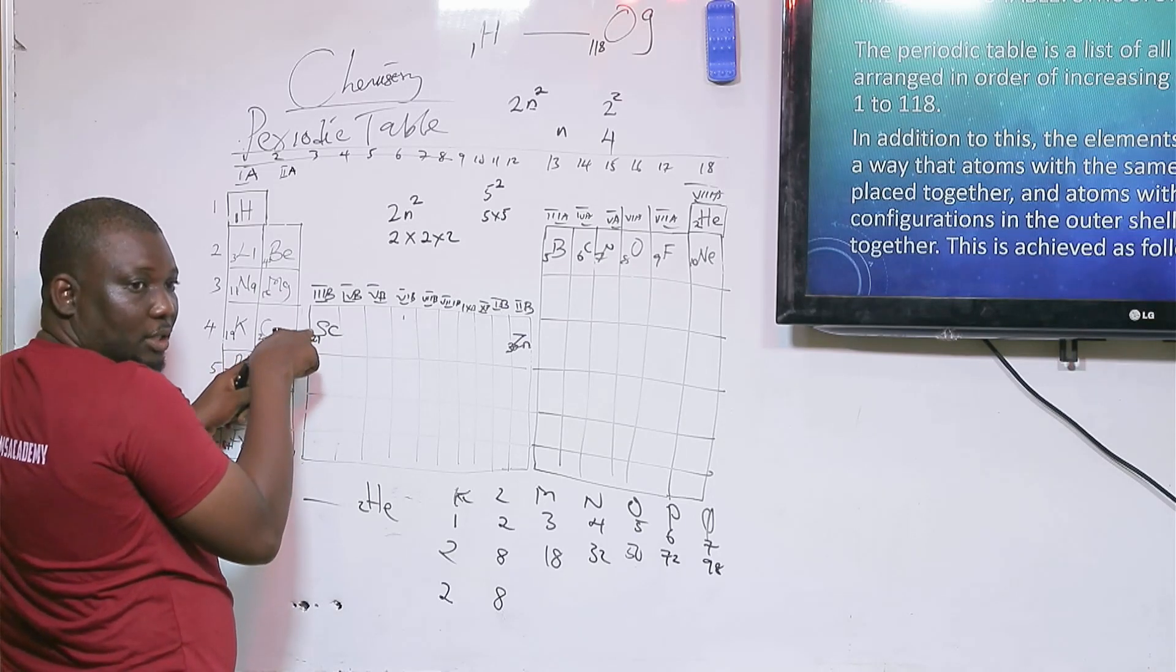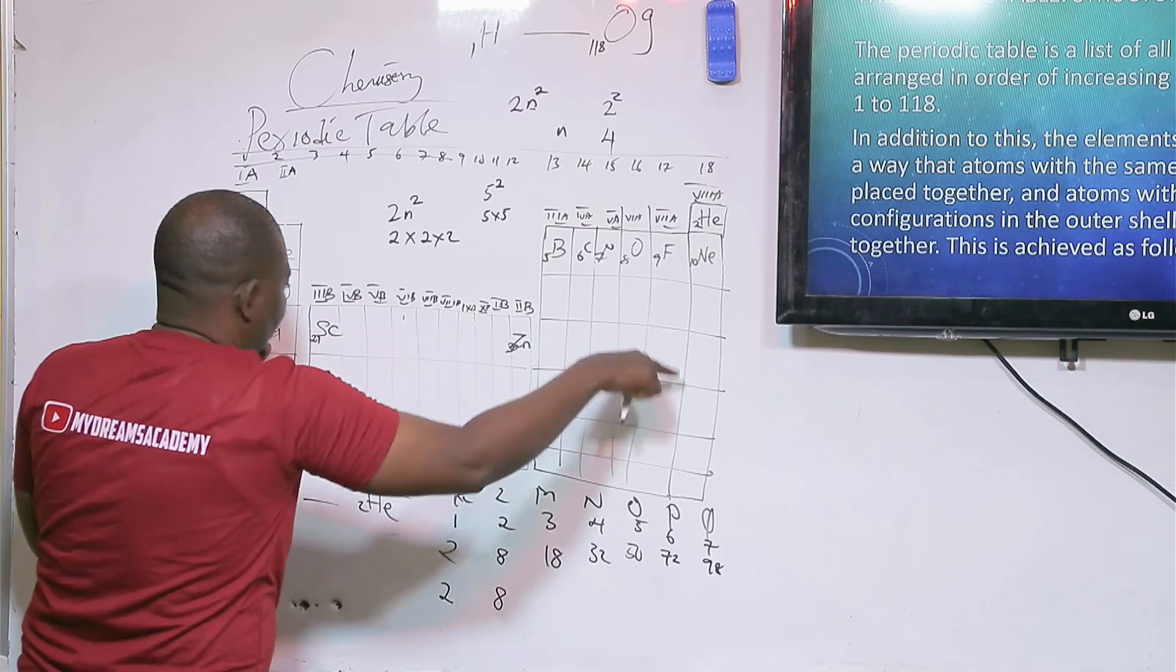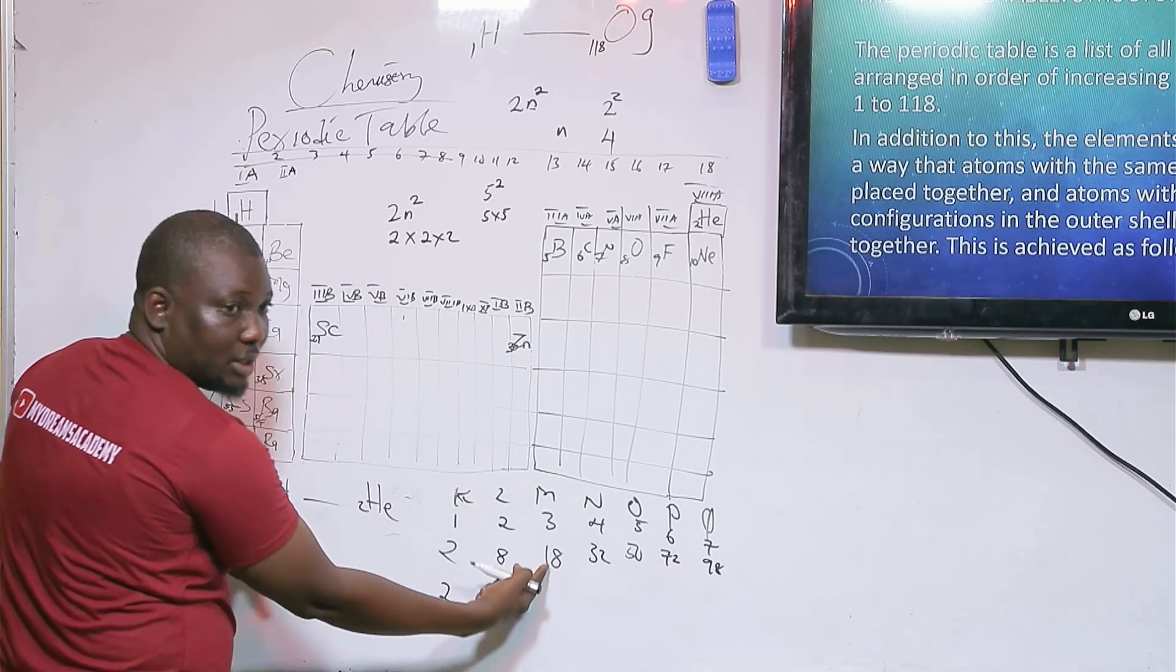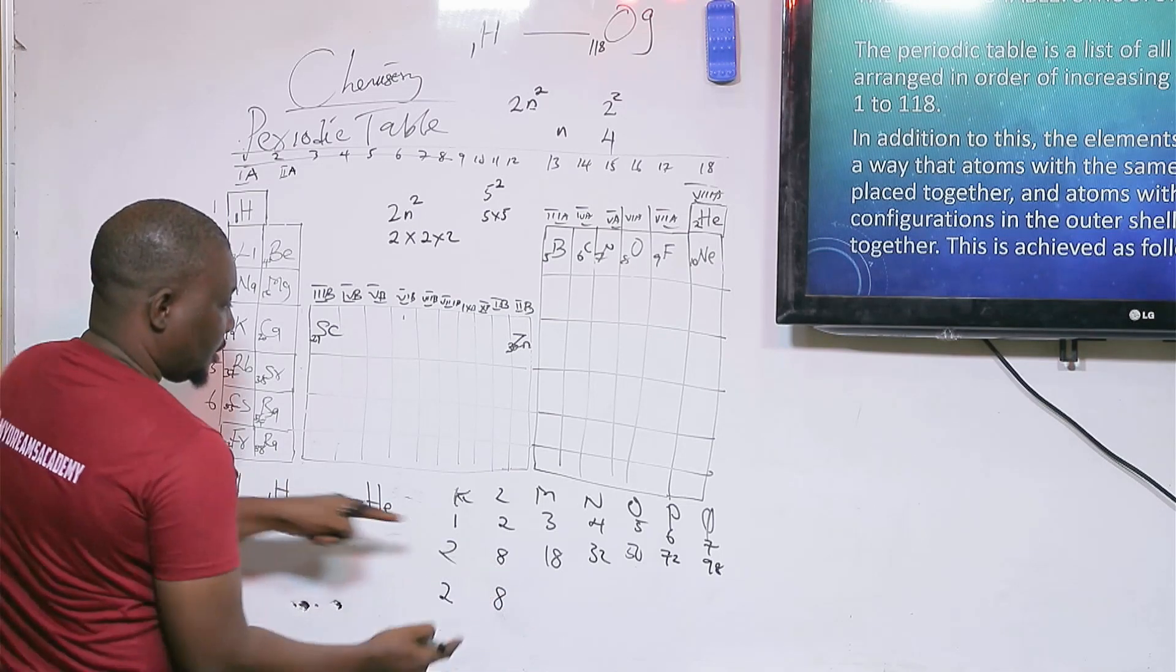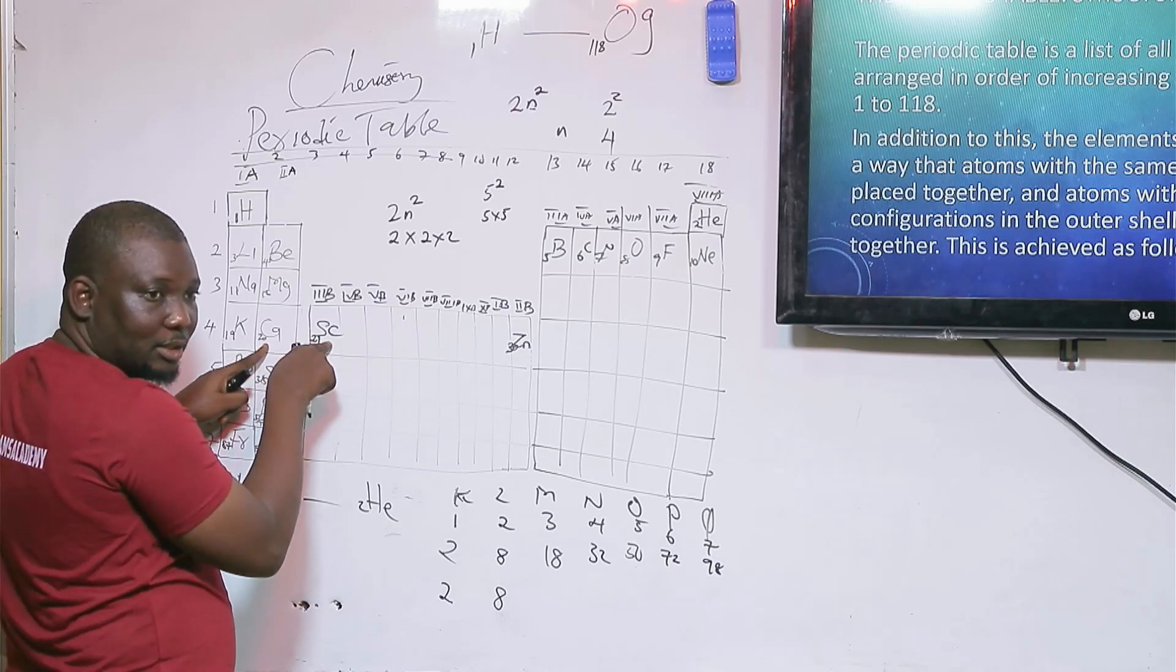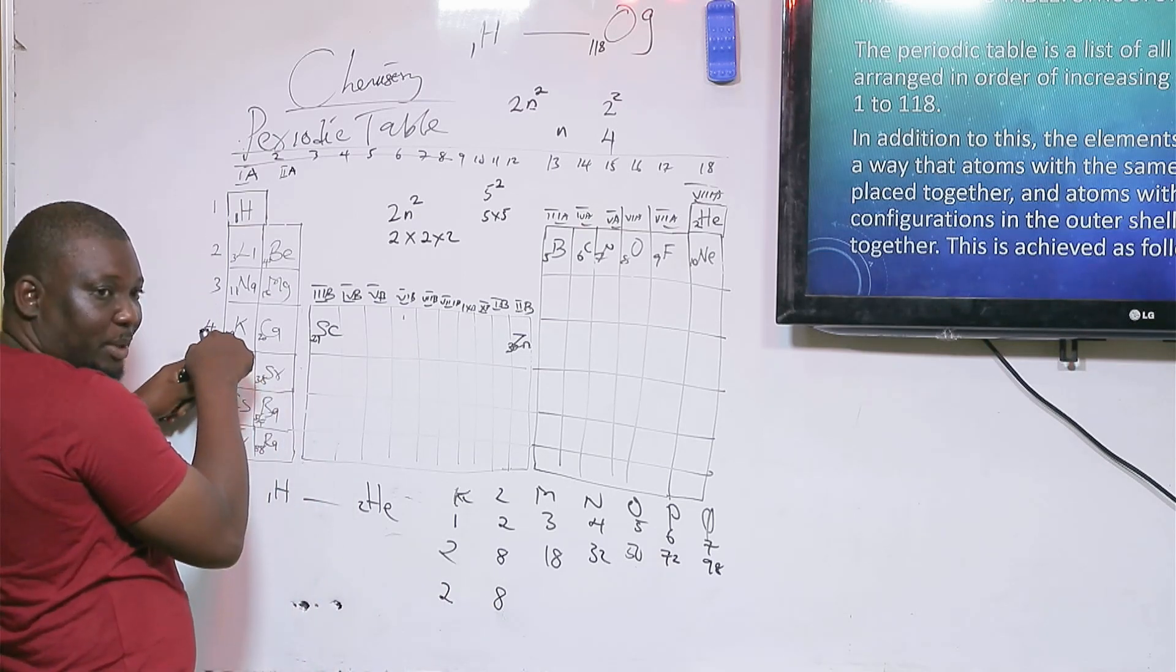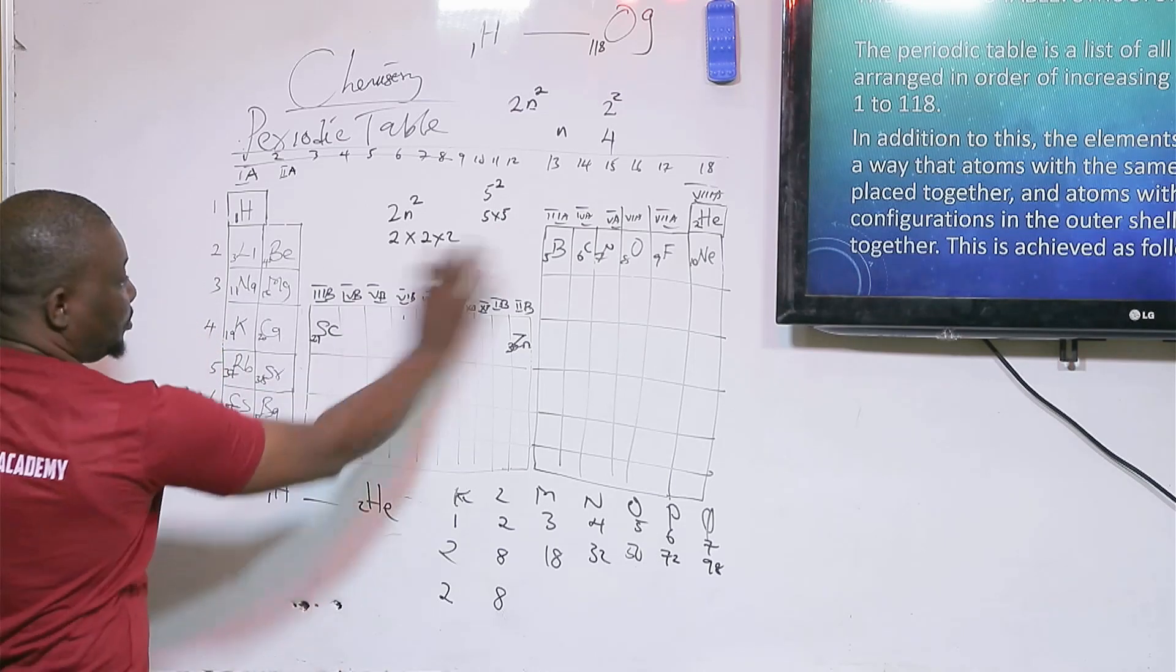This is the last element before the transition or D-block elements. After this, by the time you go around and come back again, you might have added 10 to the M shell. That will give you 18. In that regard, the M shell is going to accommodate 18 electrons eventually. In this periodic table, we must always have two octet levels. The first octet level is 8, the second one is 18.